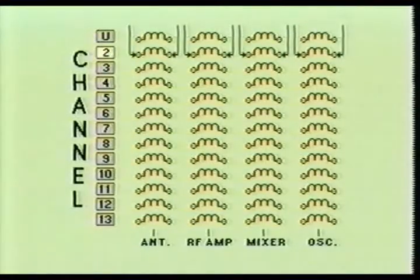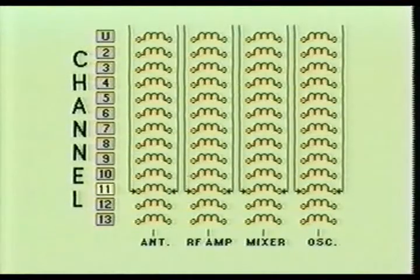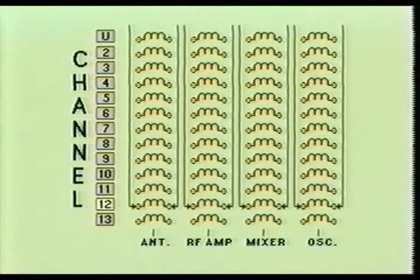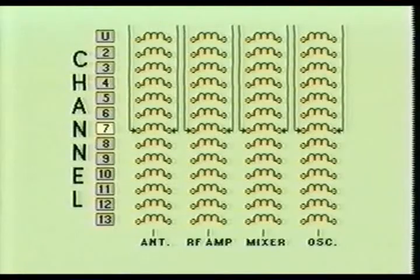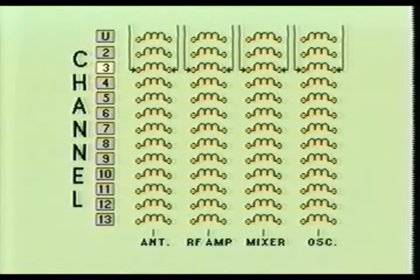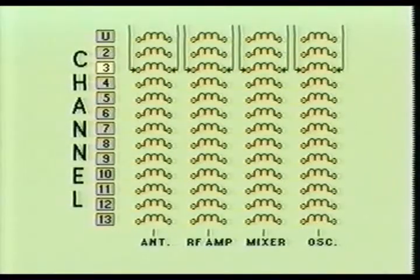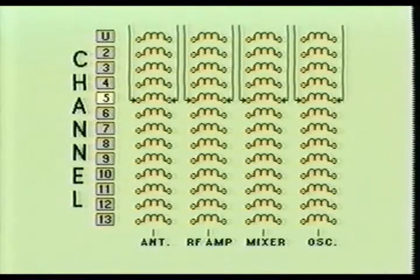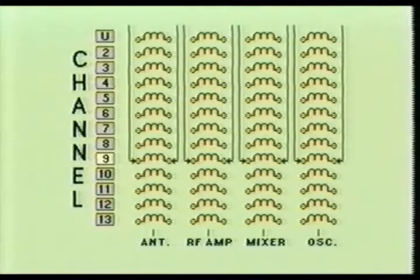Each group of tuned coils would be factory designed and preset to receive one television channel. By rotating the tuner shaft, you would be changing the bandwidth operating frequency of the affected circuits, thereby allowing channel selection.